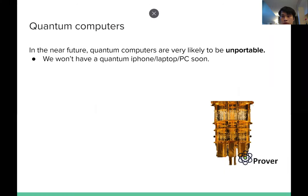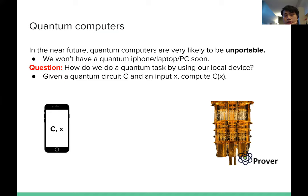In the near future, we believe that quantum computers are very likely to be unportable. We won't have a quantum iPhone, laptop, or PC soon. This is because for quantum computers, we need a very large space to keep them, and we also need a very stable environment to make sure that the qubits are coherent. So we cannot have them with us everywhere. Suppose I have a local device which has no quantum power — how do we do a quantum task using our local device? For example, if I am given a quantum circuit C in a classical way, like a classical description of how to arrange the gates and input X, how do you compute C of X from your local device?